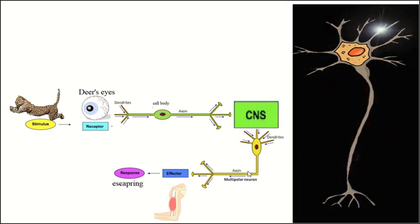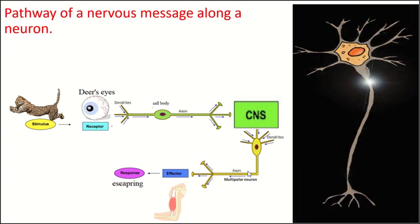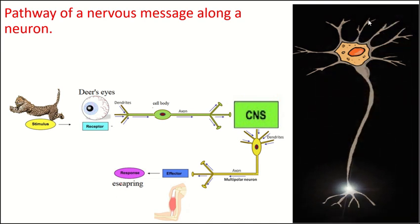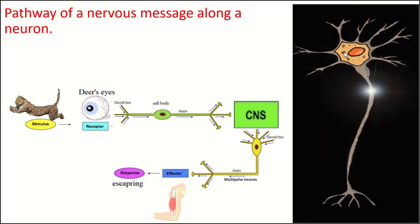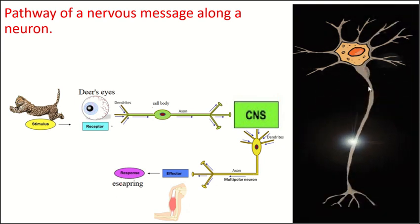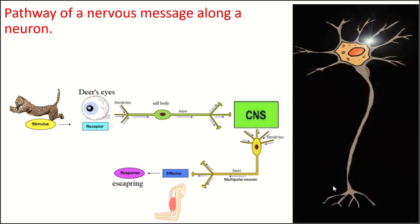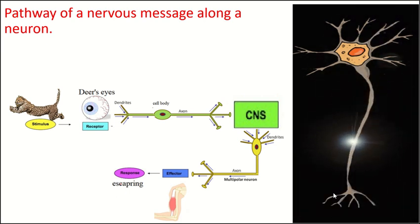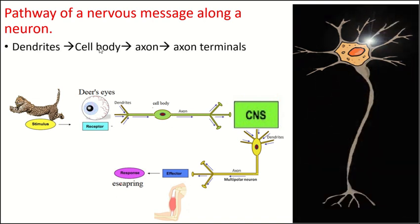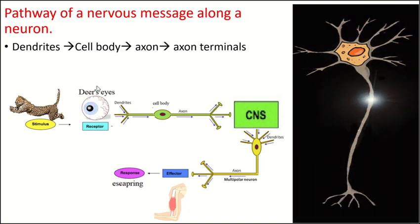Now we will talk about the pathway of a nervous message along a neuron. As shown in this animation, dendrites receive messages and transmit them towards the cell body, whereas the axon transmits the messages away from the cell body to the axon terminal. So the pathway of the nervous message is: dendrites → cell body → axon → axon terminals.